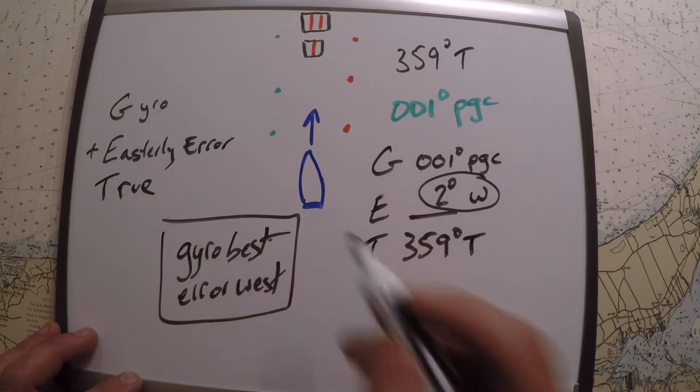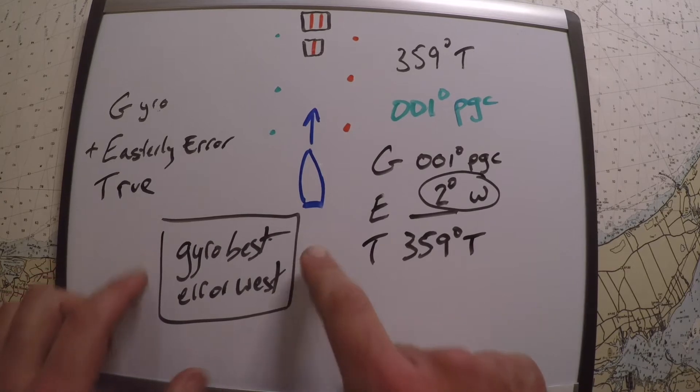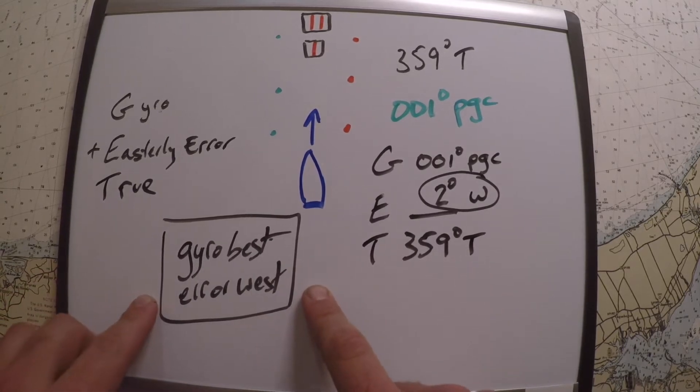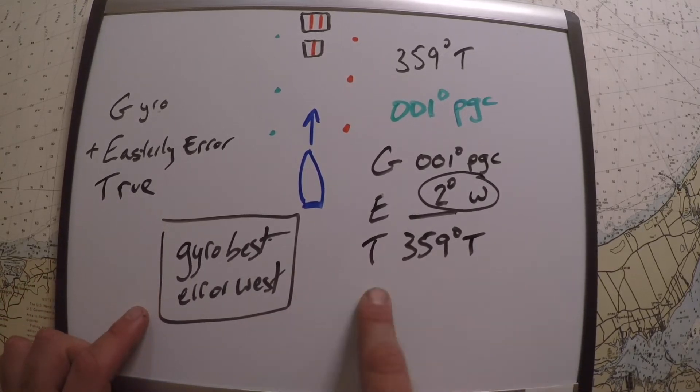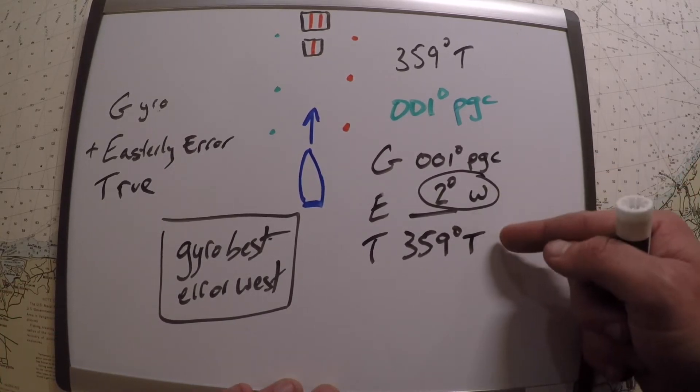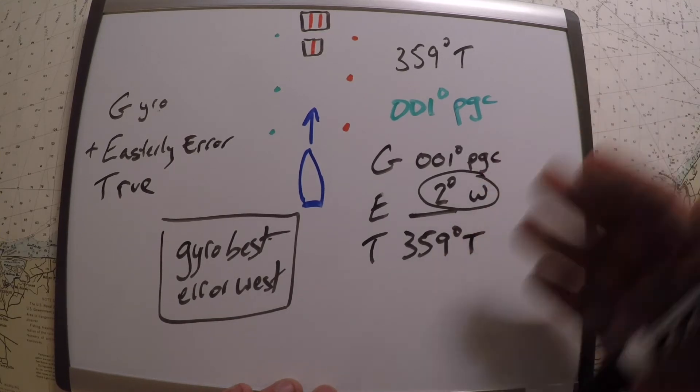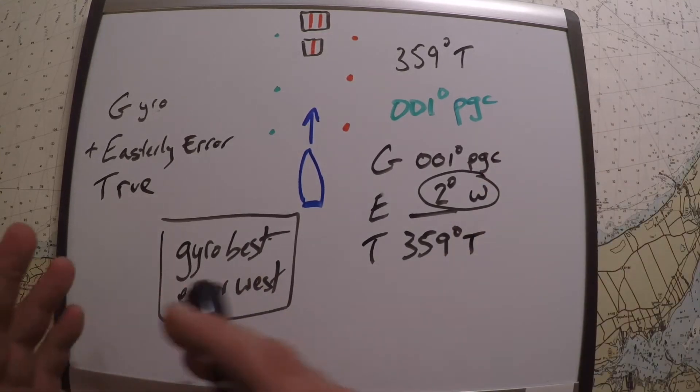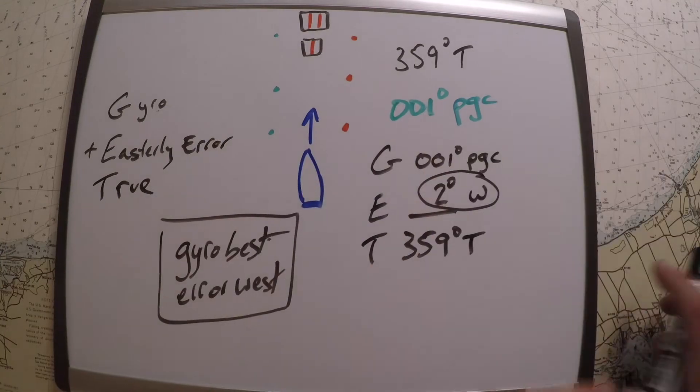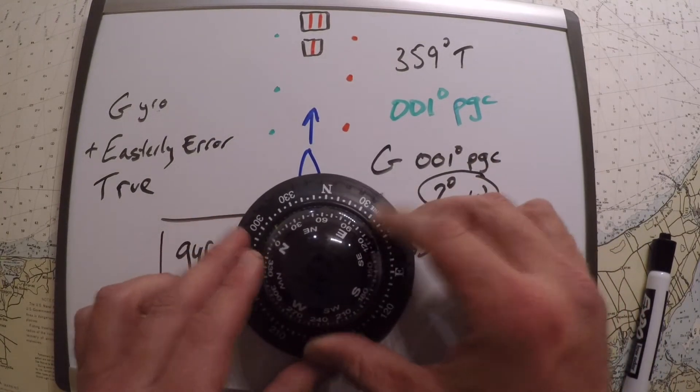Now this is one that I learned in school, but it often confuses people because they're like, what is gyro best mean? Well, in essence, if the gyro number is higher than the compass—than the true value—then the error is west. And so that's where people get confused. They're like, well, 359 is higher than 001. But in this case, what we mean by gyro best or bigger is if it's further to the right. So on this compass here—I know this is a magnetic compass, that's just used as an example.